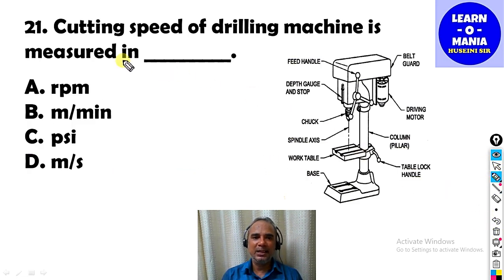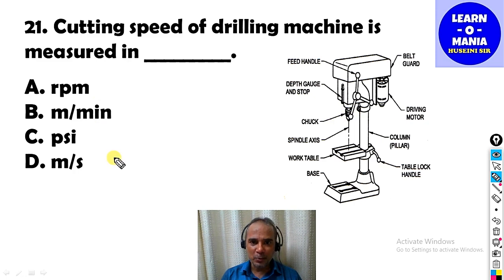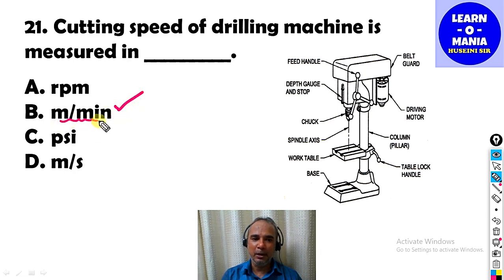Our next MCQ: The cutting speed of a drilling machine is measured in which unit? Note that revolution speed is not asked — cutting speed is asked. Cutting speed is measured in meters per minute. So the answer is option B — meters per minute.